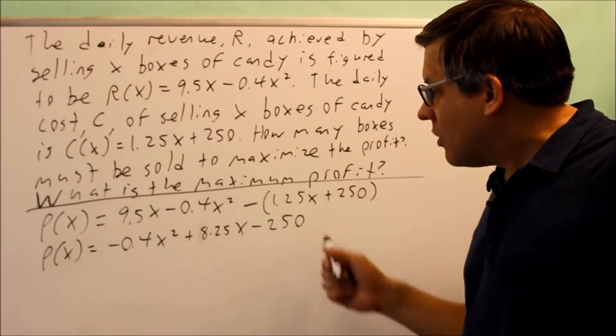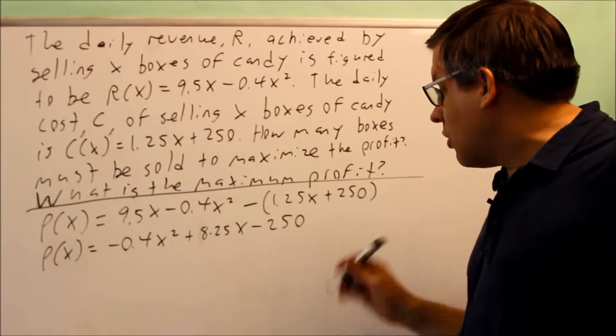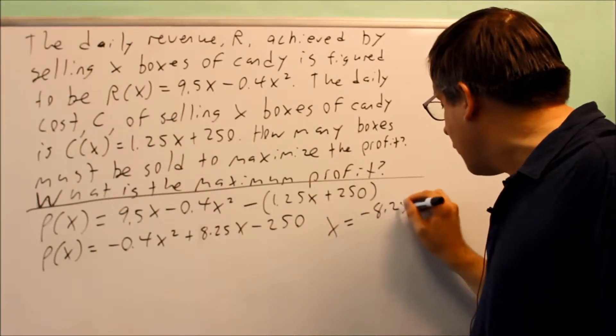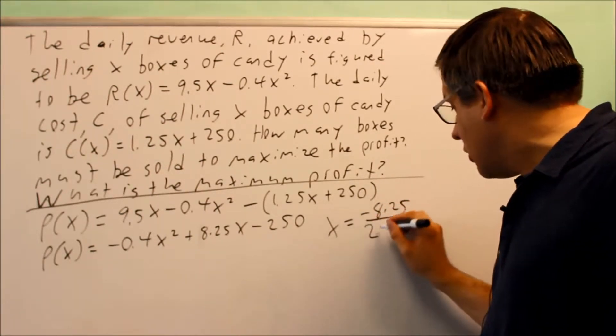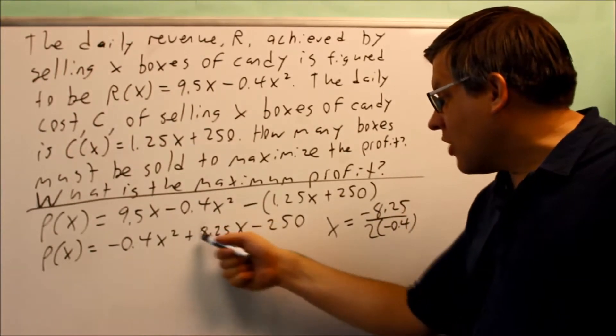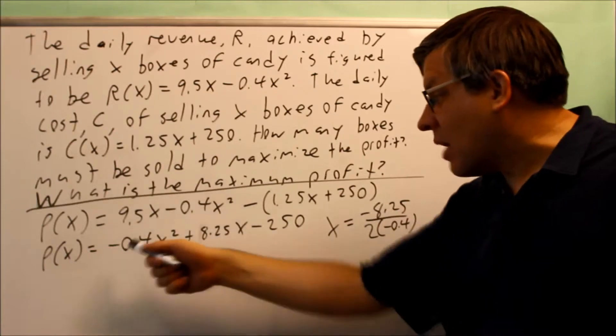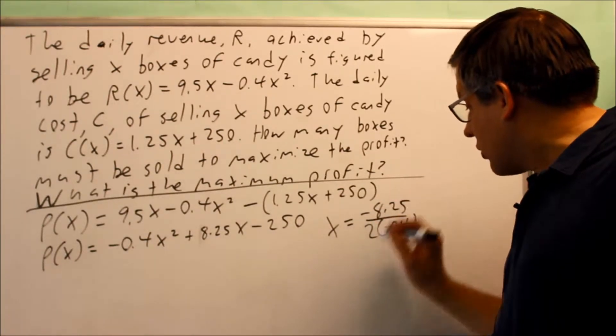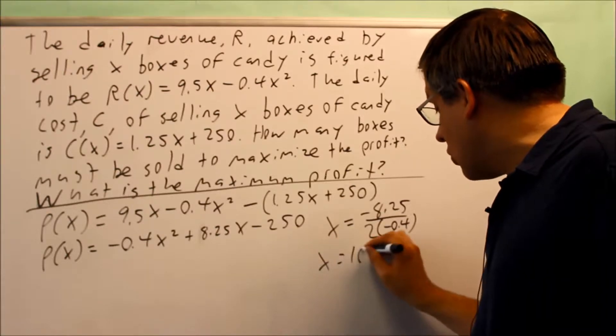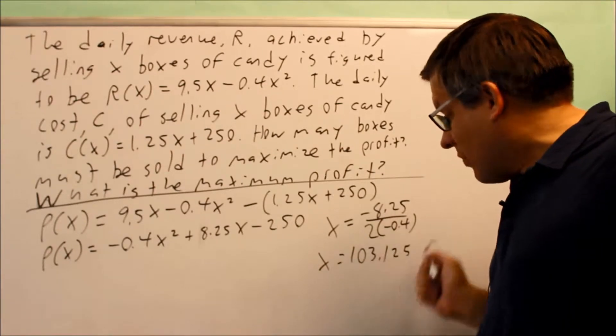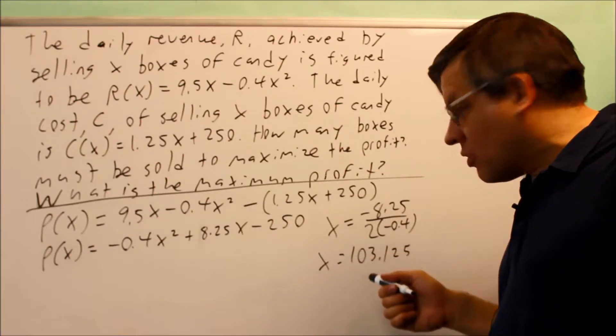We're going to do x equals negative b over 2a. So we're going to do negative 8.25 over 2 times negative 0.4. That's negative b over 2 times a, and a is negative. The negatives are going to cancel. If you work this out what you're going to get is 103.125.